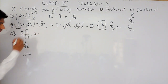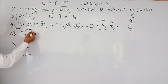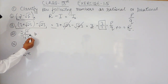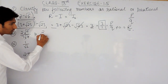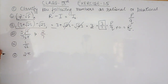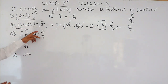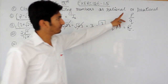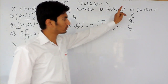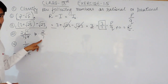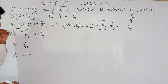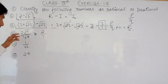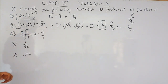For the third part, √7 and √7 cancel each other and the result is 2 upon 7. This number can be written in the form of p upon q where q is not equal to 0. So by the first definition, this expression is a rational number.